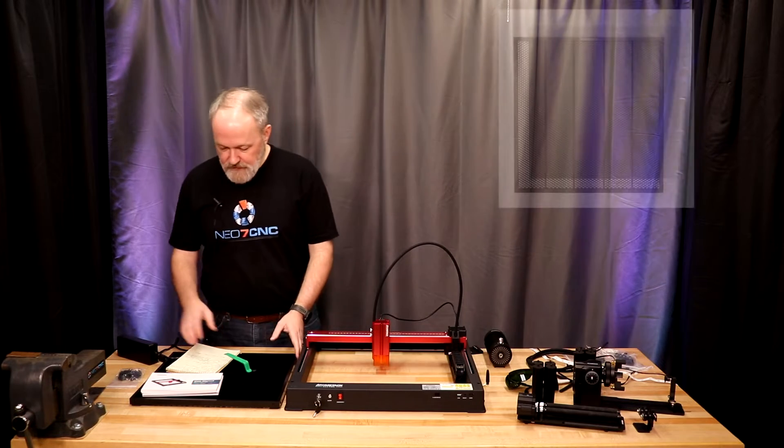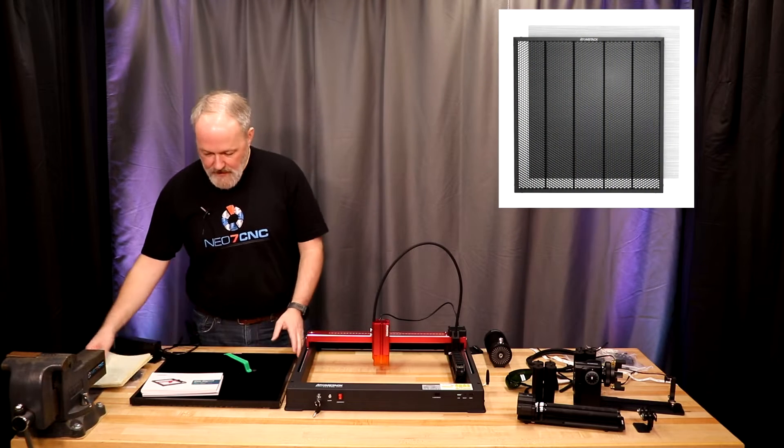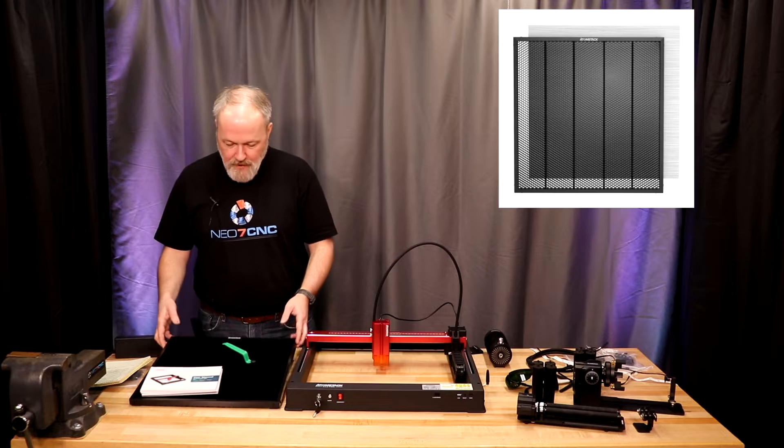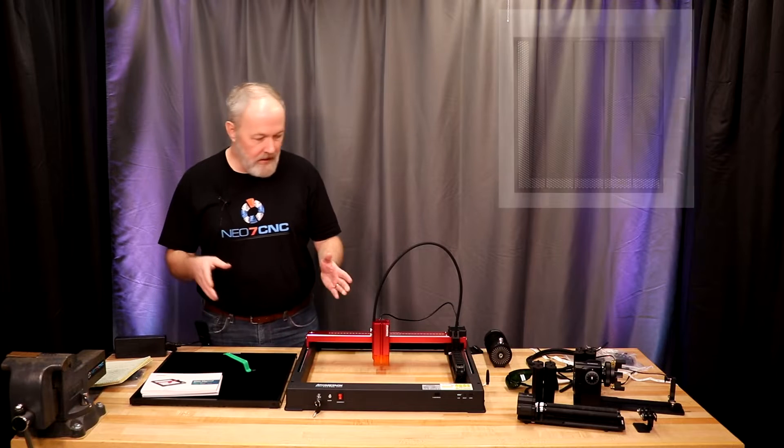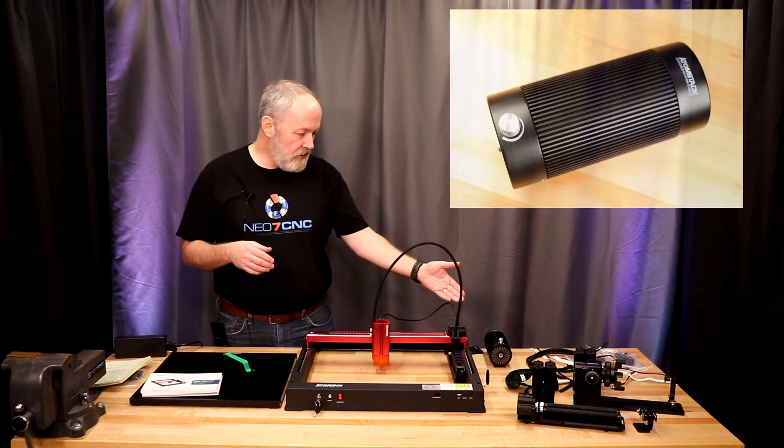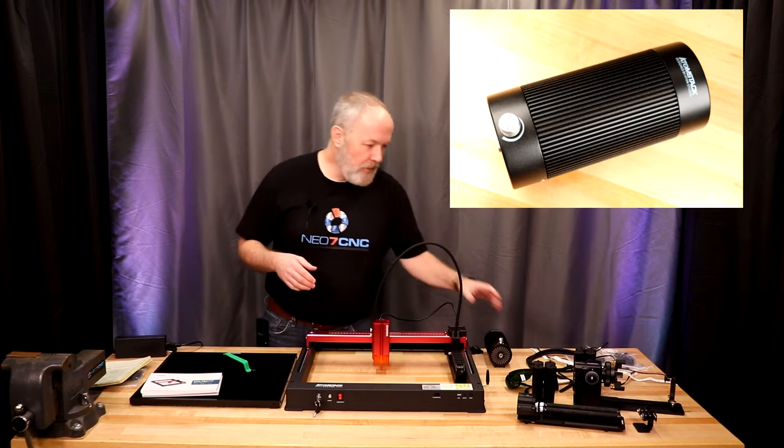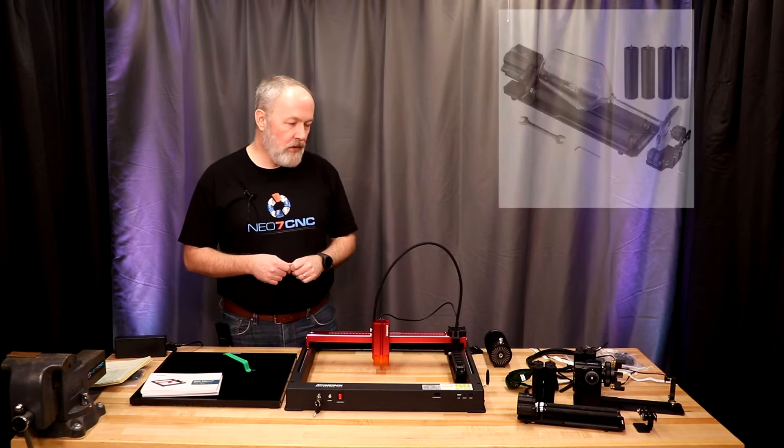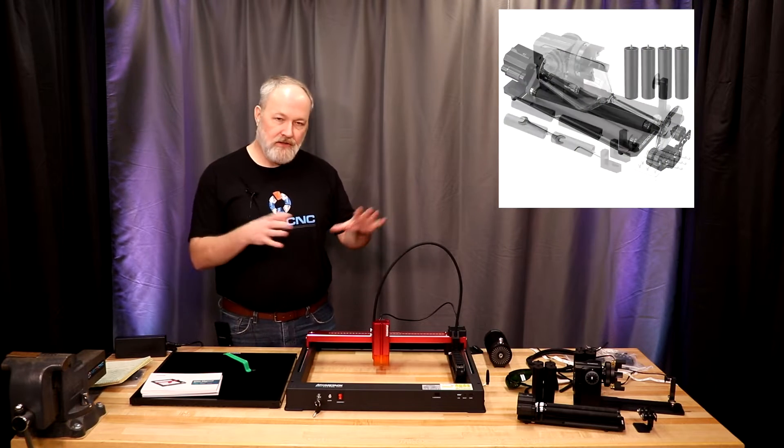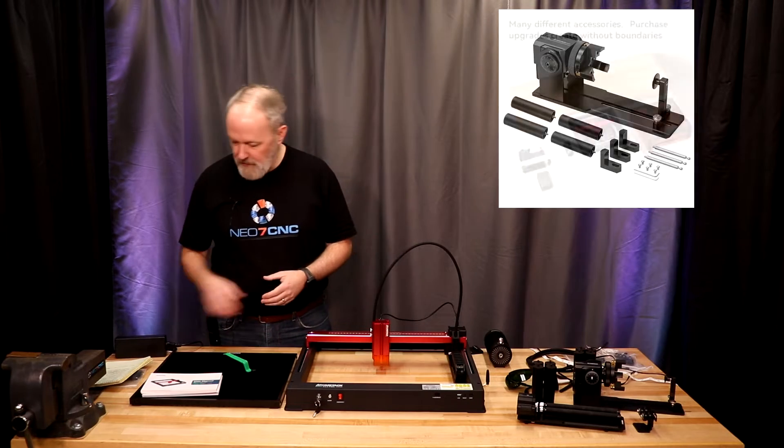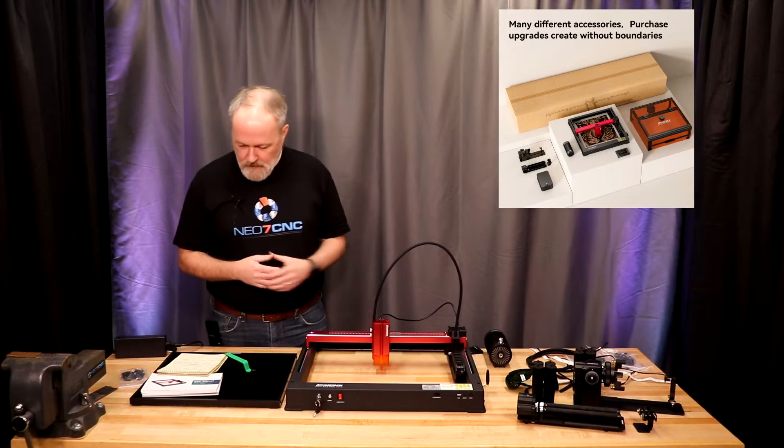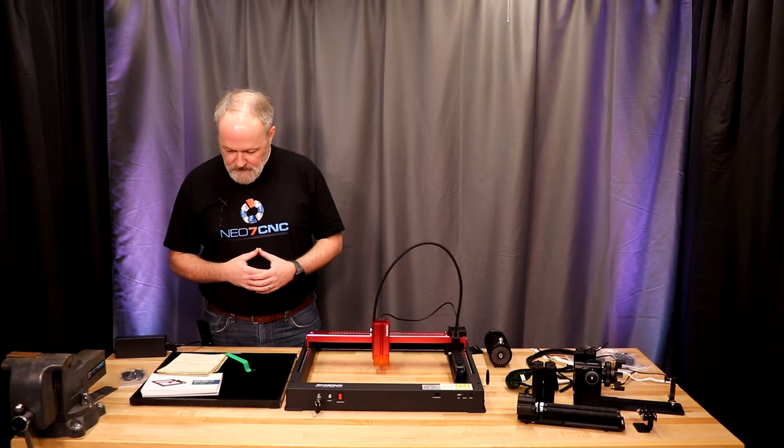This has a lot of accessories. We have a honeycomb type bed for aid when you're cutting. We have the already mentioned air pump, two different styles of rotaries, and I believe there's some other accessories like enclosures that you can buy for this. So there's a pretty good family of components to go with this.